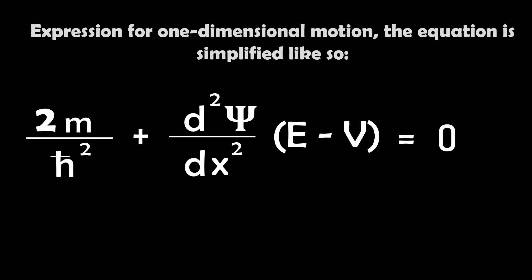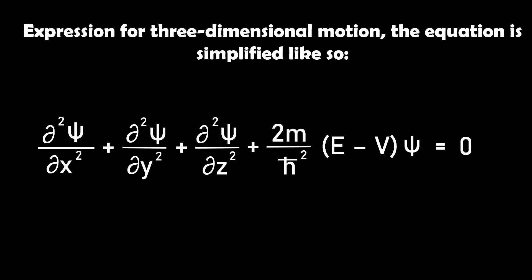The equation appears in different forms depending on the dimensions involved. So for one-dimensional motion, the equation is simplified like so. But in reality, electrons move in three-dimensional space, making the equation more complex and often expressed in spherical coordinates.